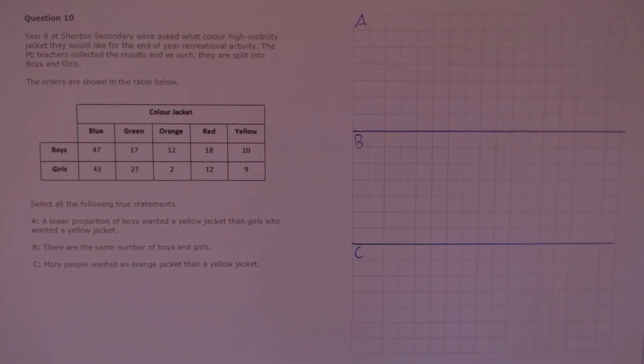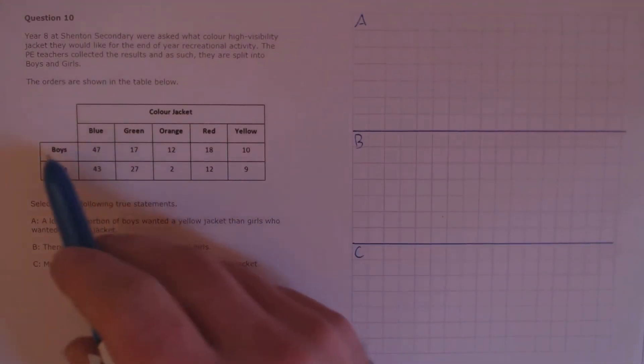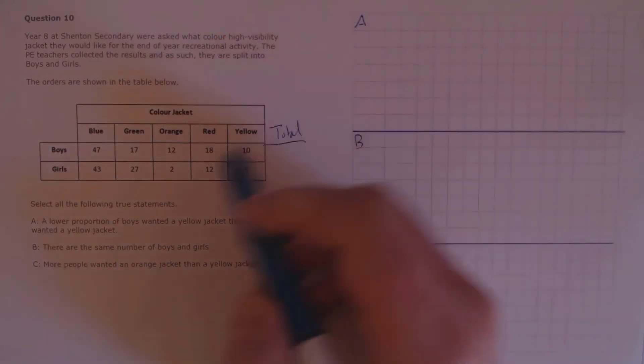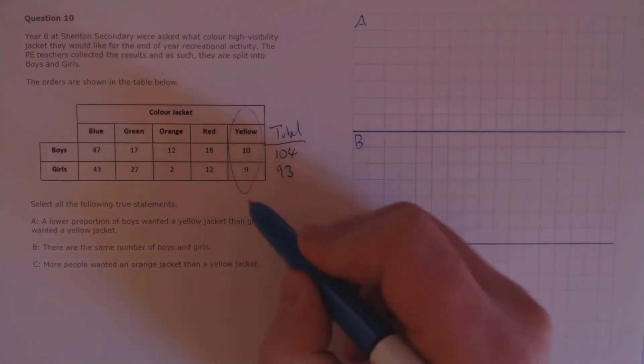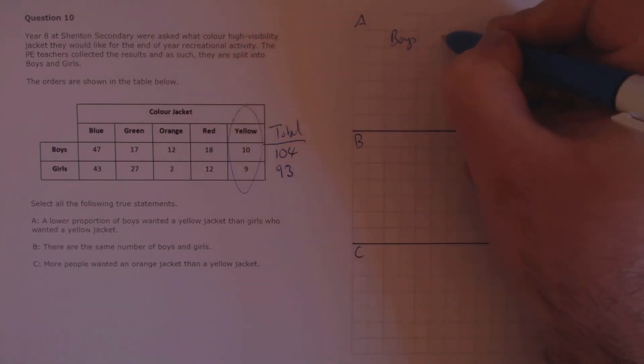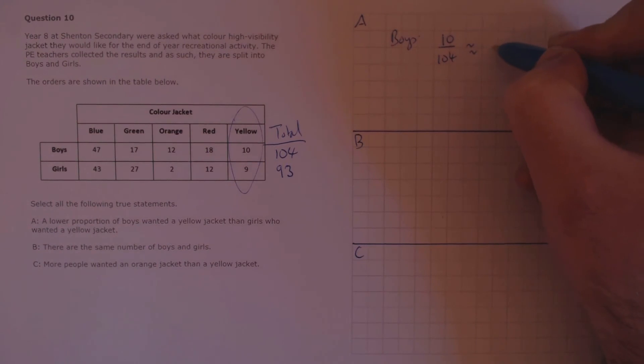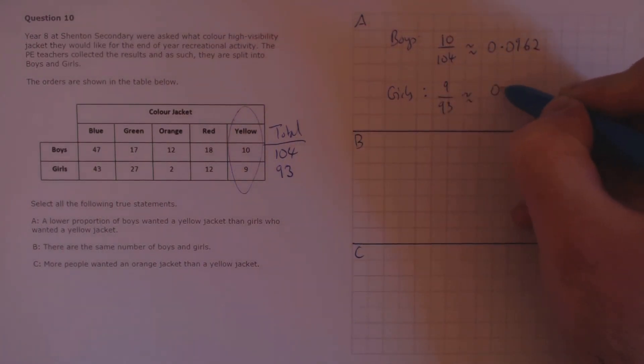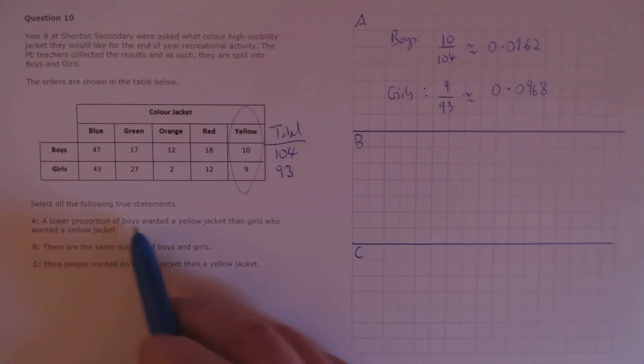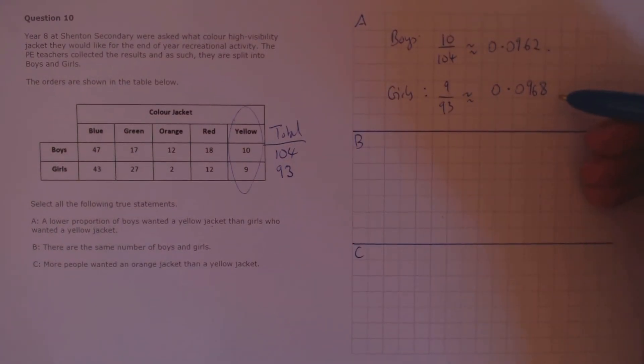Question 10. Year 8 at Shenton Secondary were asked what colour high visibility jacket they would like for the end of year recreational activity. The PE teachers collected the results and as such they are split into boys and girls. The orders are shown in the table below. Select all the following true statements. A. A lower proportion of boys wanted a yellow jacket than girls who wanted a yellow jacket. To calculate proportion we need to know the totals first. So I'm going to add a total column here. The total number of boys, we just need to add all those up, that's 104, and for girls that's 93. Let's calculate the proportion of yellow jackets for boys and for girls respectively. So for boys that's 10 over 104, which is approximately 0.0962, and for girls that's 9 over 93, which is approximately 0.0968. So we want a lower proportion of boys wanted a yellow jacket than girls, and this number is lower than the number for girls, so that's true.